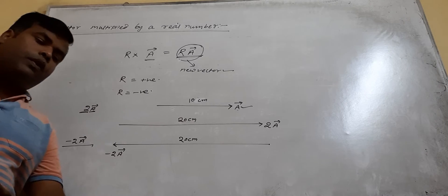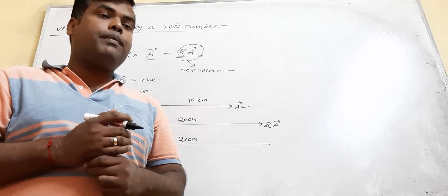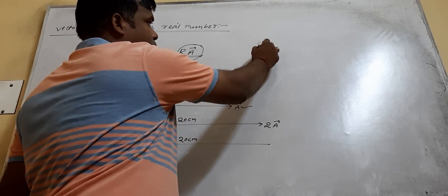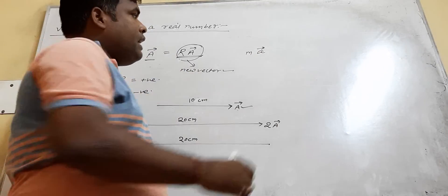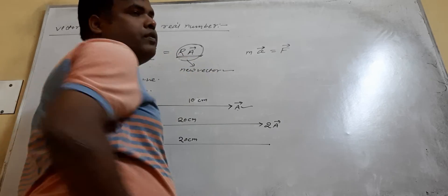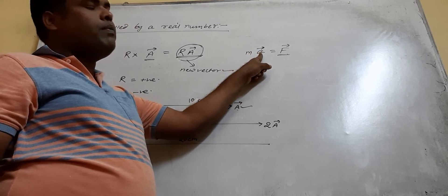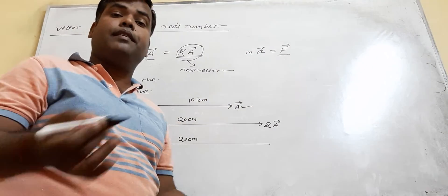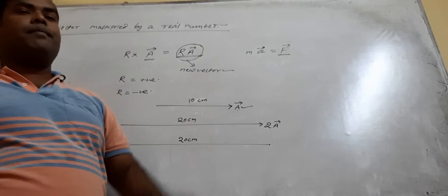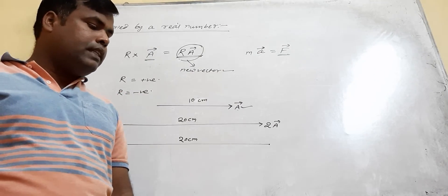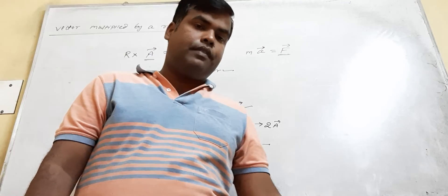A physical example of a vector multiplied by a scalar: acceleration multiplied by mass (a scalar) gives force. Force has magnitude equal to m times the magnitude of acceleration, and force has the same direction as acceleration. This is all about vector multiplied by a scalar or real number.